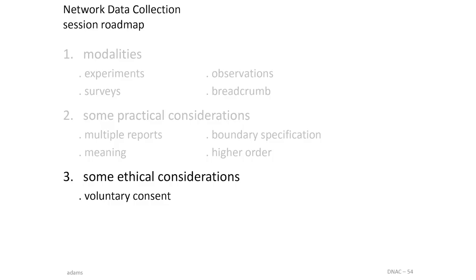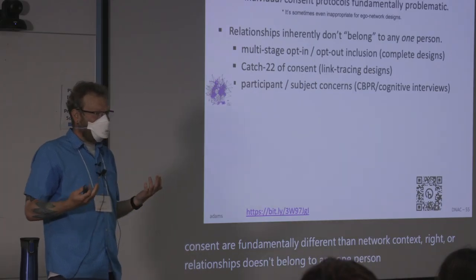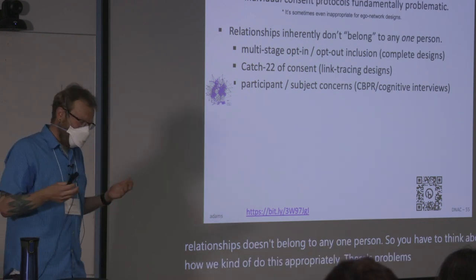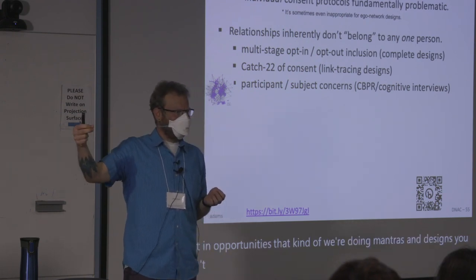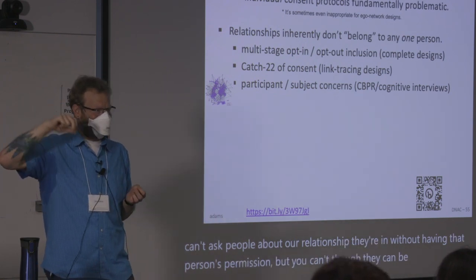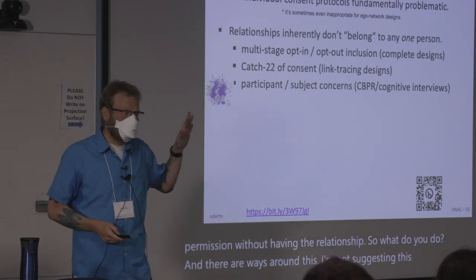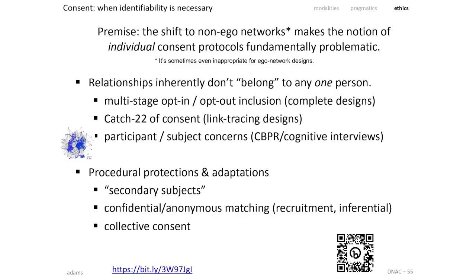The reason this matters is that things like voluntary consent are fundamentally different in the network context — a relationship doesn't belong to any one person, so we have to think about how we do this appropriately. There are problems in the opt-in process: if we're doing link tracing designs, you can't ask people about a relationship they're in without having that person's permission, but you can't know you need that person's permission without having the relationship. There are ways around this, but these are the things unique to networks that are different from other types of approaches.